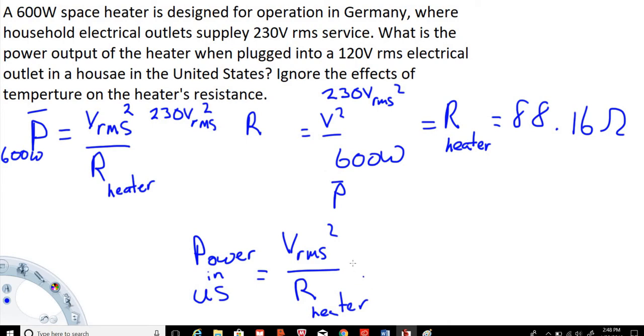So what that is going to be is, since we're in the U.S. now, it's going to be 120 volts RMS squared divided by the resistance of the heater, which is 88.16 ohms. So what we do is we will have 120 and then we'll square it and divide that by 88.16.